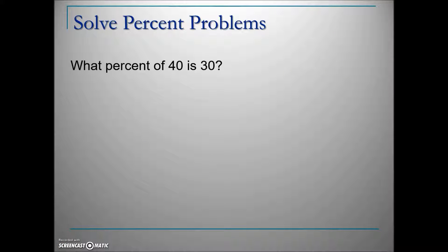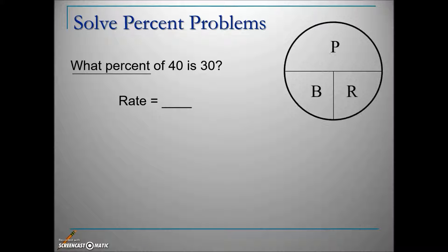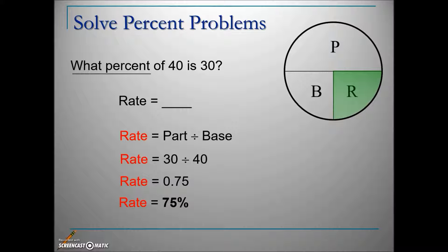Another example: What percent of 40 is 30? There's no percentage given—the question asks for it. We're looking for the rate. The number following 'of' is our base, leaving 30 as our part. To solve for rate, cover it up: part divided by base. 30 divided by 40 gives a decimal. We want rate as a percentage, so move the decimal two places right, giving 75%.